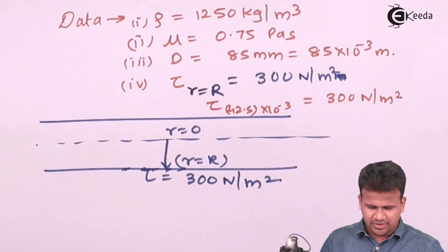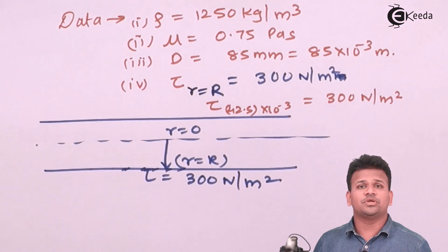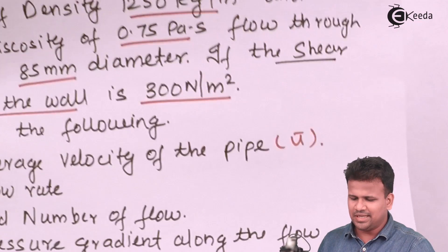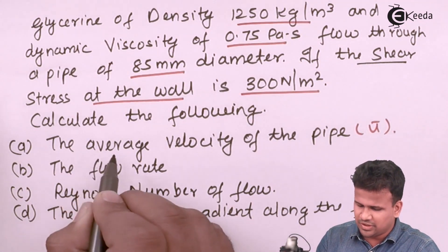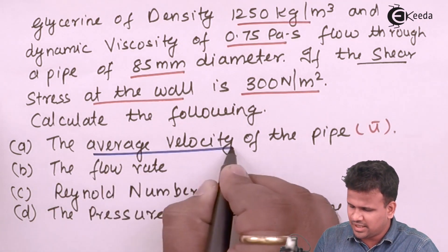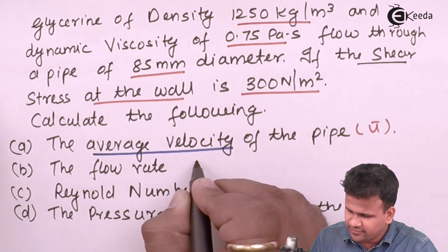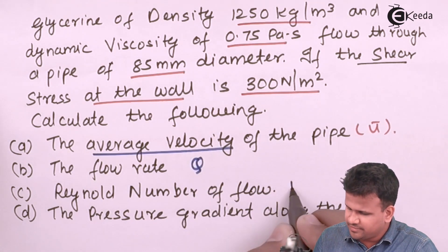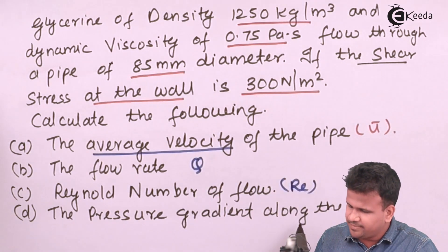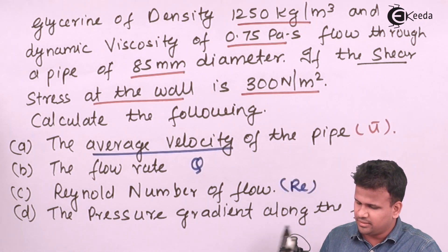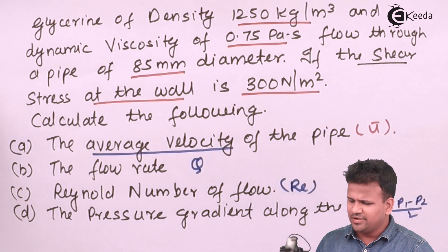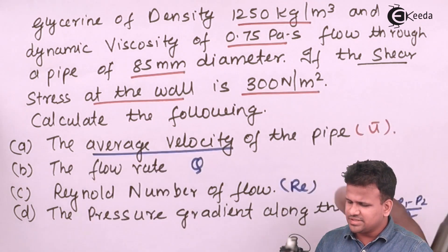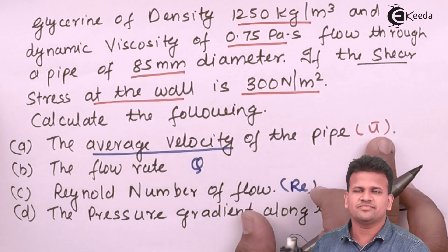So these are all the things given to us. They have told us to calculate: average velocity U bar, flow rate Q, Reynolds number Re, and the pressure gradient along the flow, which is (P1 − P2)/L or dP/dx. All these things are linked to each other, so let us calculate U bar first.